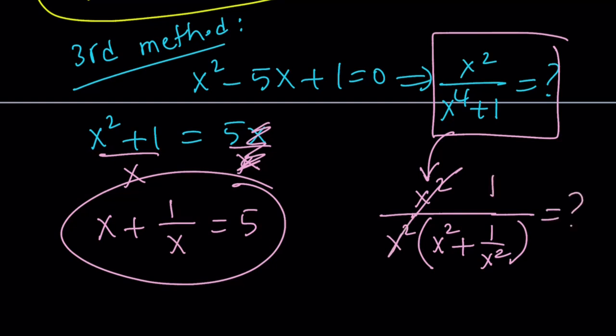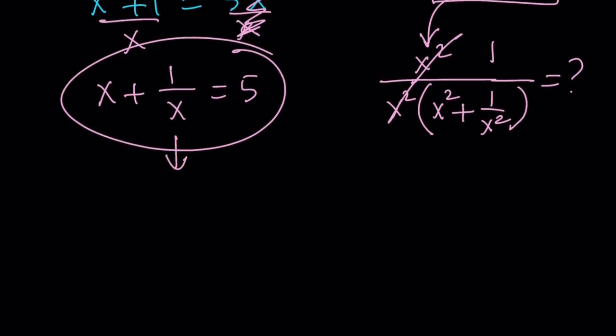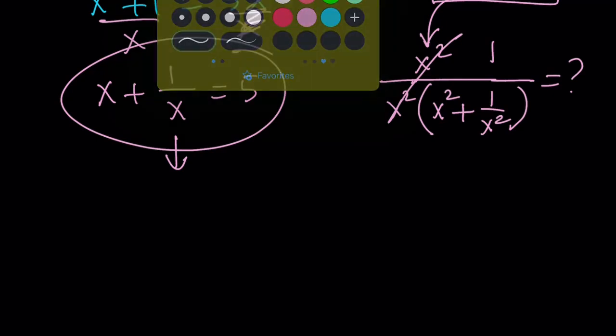If I can find x squared plus 1 over x squared, then I got the answer. But what is it? Given x plus 1 over x, we can go ahead and square both sides, right?